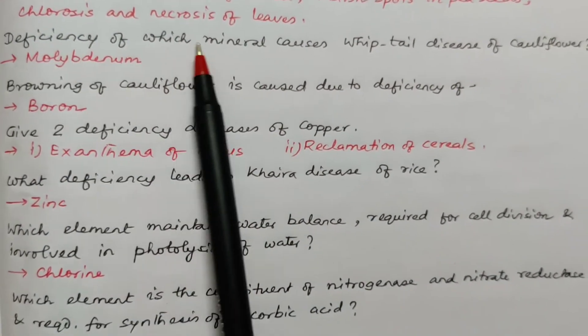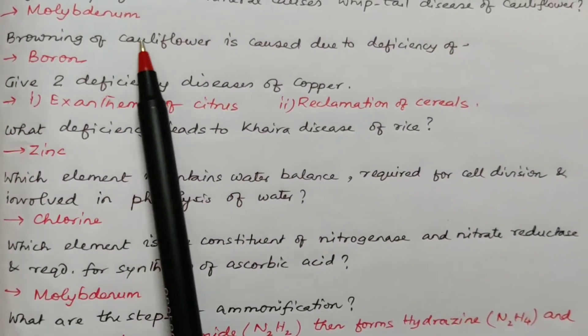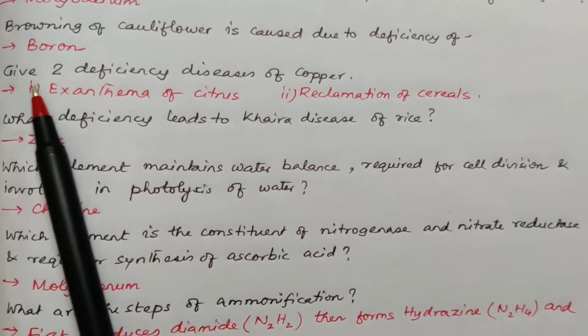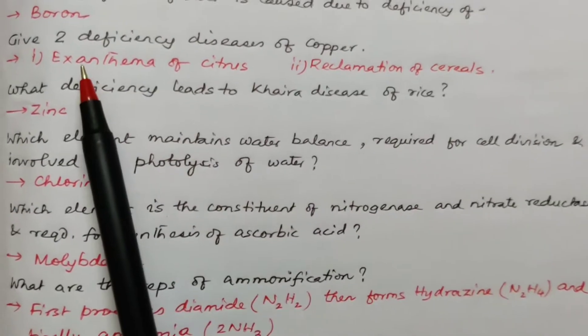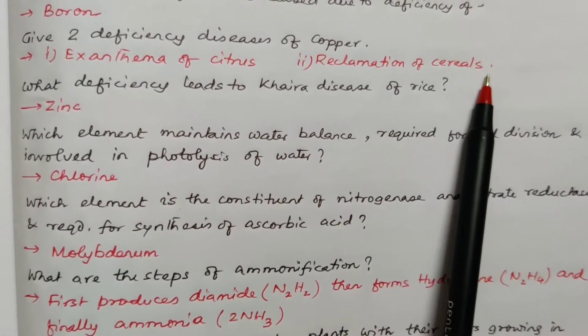Now deficiency of which mineral causes whiptail disease of cauliflower? It's molybdenum. Browning of cauliflower is caused due to the deficiency of boron. Give two deficiency diseases of copper. We just now said that one is exanthema of citrus, another is reclamation of cereals.